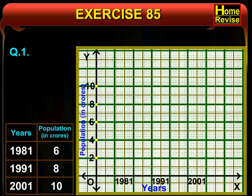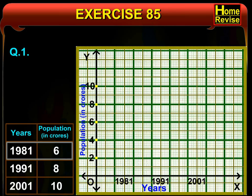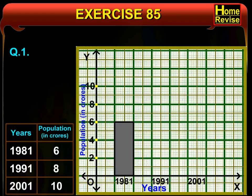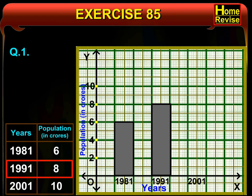We shall stop at 10 because the highest number of population is 10. Now, let us start plotting the bar graph. At a distance of 1 cm from O on the x axis, we shall plot the bar graph for the year 1981. The population was 6 crores, so this bar will go up to the level of 6. Leaving a gap of 1 cm, we shall draw the bar graph for 1991. In 1991, the population was 8 crores, so this bar ranges up to the level of 8.